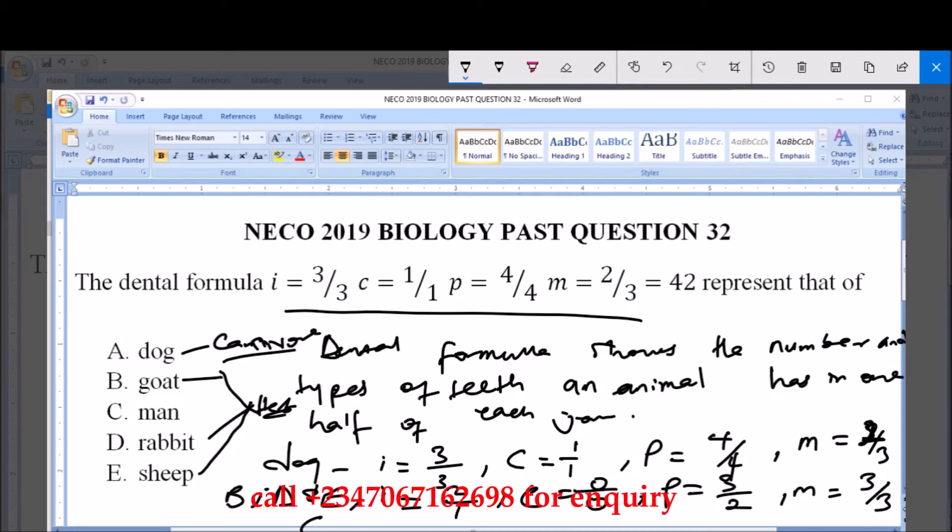Option C, which is man, gives us I, the incisor, 2/2; C, canine, 1/1; P, premolar, 2/2; and M, molar, 3/3.